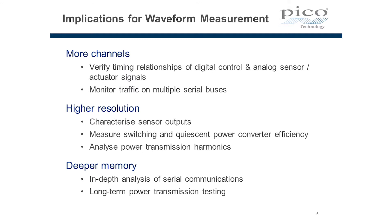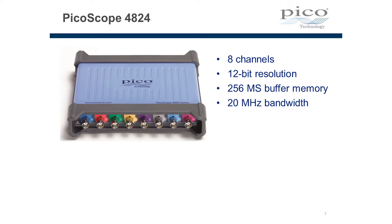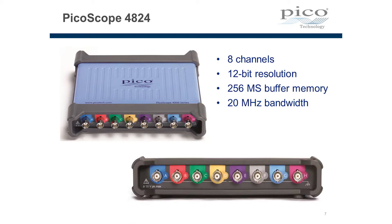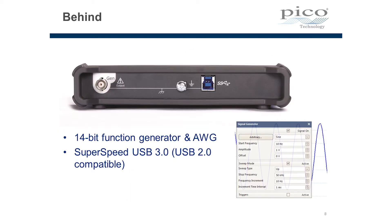Deep memory is something that enables that kind of measurement. The Picoscope 4824 is the first measurement device in its class to offer 8 channels with 12 bits of vertical resolution, deep buffer memory with 256 mega samples, and 20 megahertz bandwidth. On the front panel we have each of the 8 input channels, and on the rear panel we have an additional arbitrary waveform generator and function generator, and the connection to a USB 3 interface which gives the communications interface to the host computer as well as power to the scope itself.